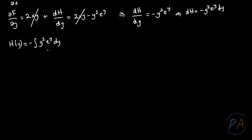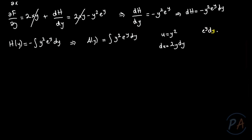Let me name A(y) = integral of y²·e^y dy. Using integration by parts, I set u = y², du = 2y·dy, dv = e^y·dy, and v = e^y. Then A(y) = y²·e^y minus 2 times the integral of y·e^y dy. Let me name this remaining integral B(y) and calculate it separately.